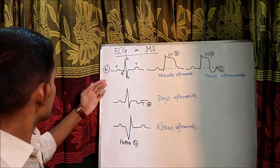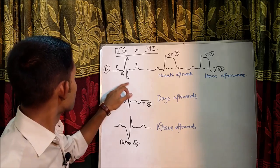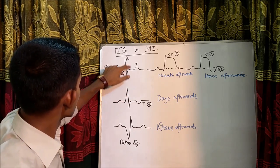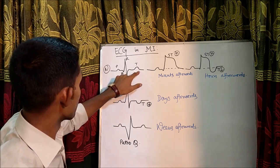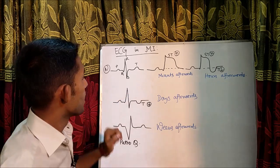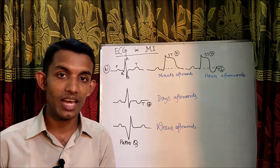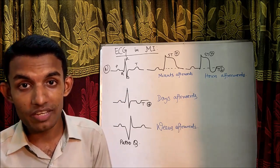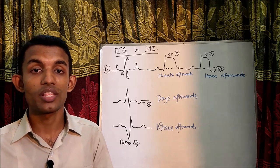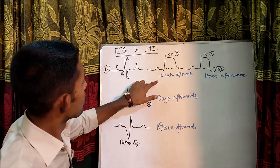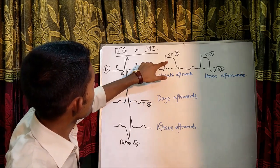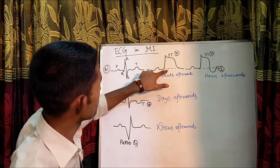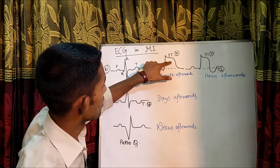So, this is a normal ECG. Here there is a P wave, QRS complex, T wave. In acute MI, or when there is a current of injury, minutes afterwards, what are the changes we'll get — we'll get ST elevation. There is a baseline and there is ST elevation.